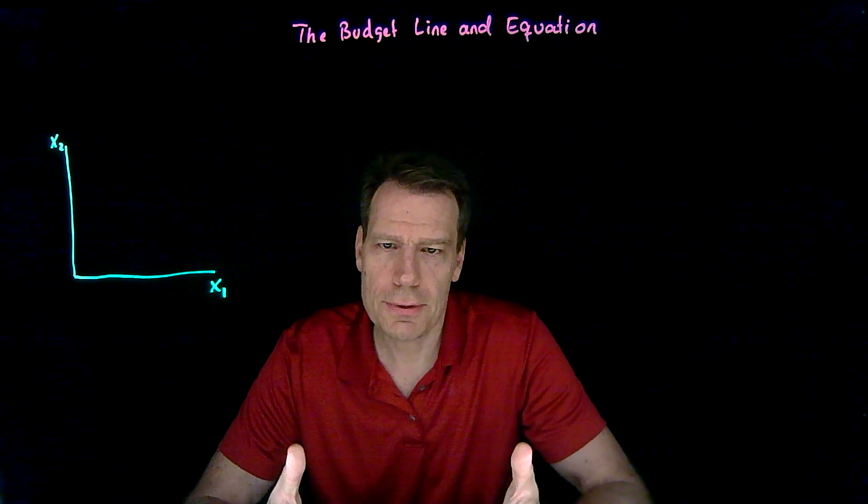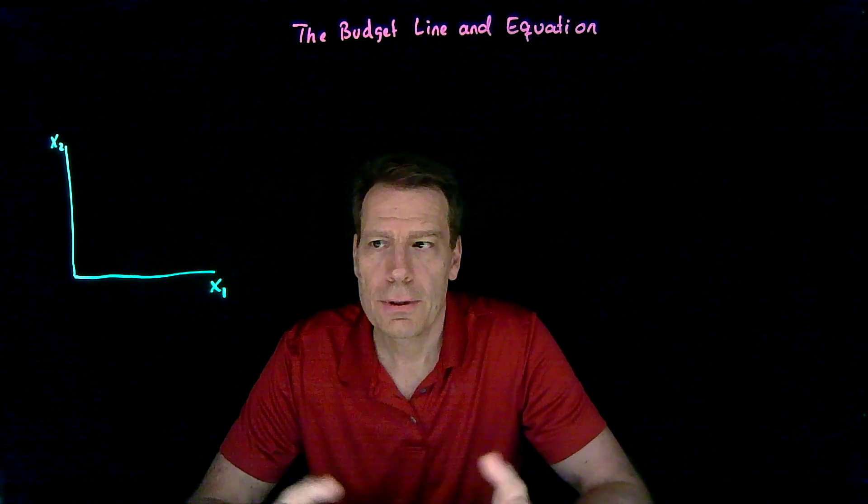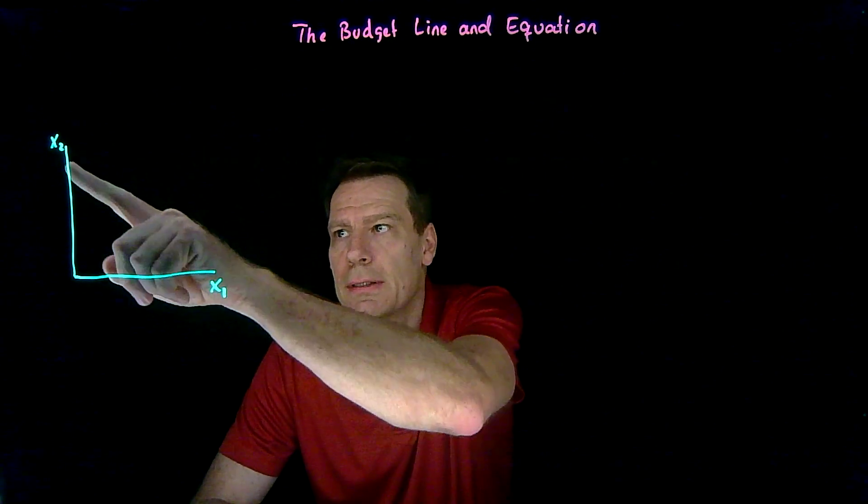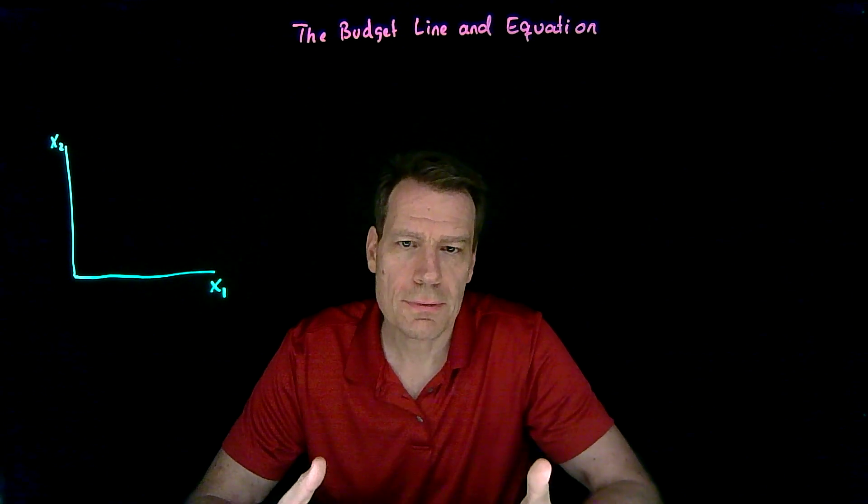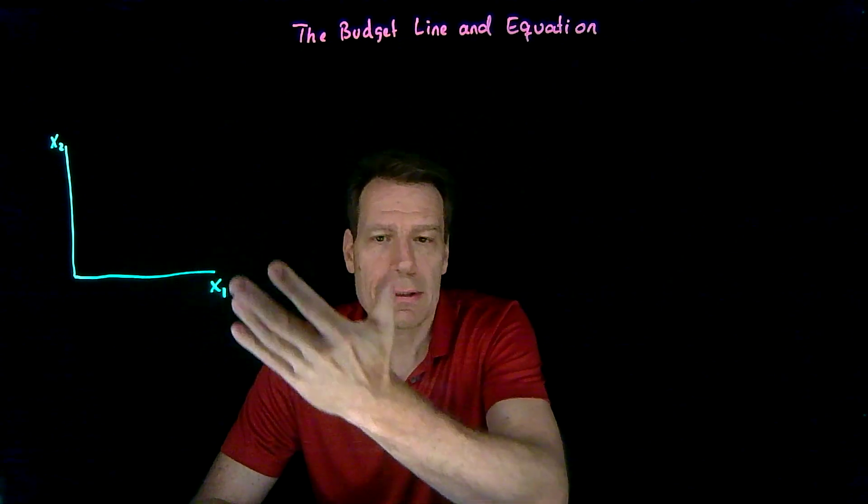We've seen that we can model baskets of goods as just points. So if we have two goods, x1 and x2, then points in this two-dimensional space are baskets of goods, and each point is a different basket.